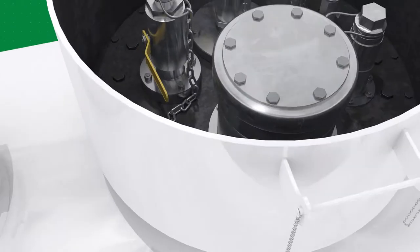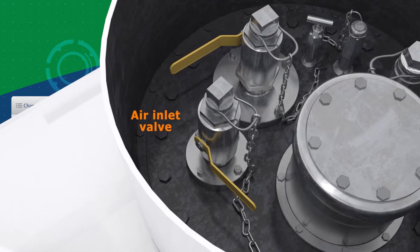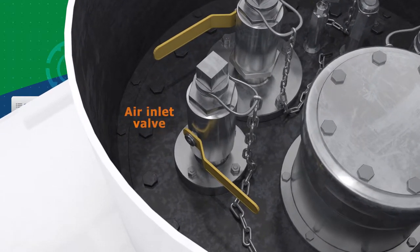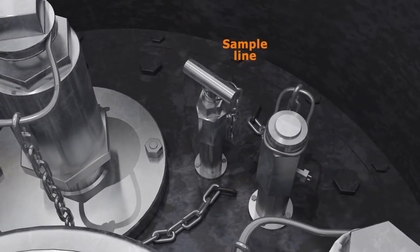The air inlet valve or vapor valve allows the operator to pressurize or depressurize the inside of the tank car to facilitate unloading or loading, respectively. The sample line is used to allow an operator to sample the commodity.